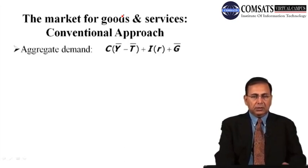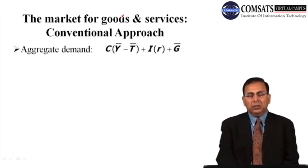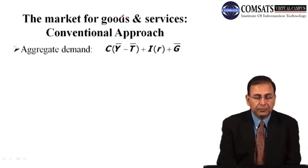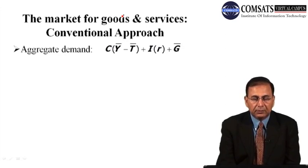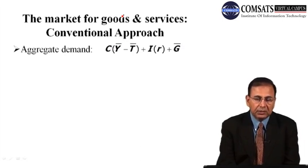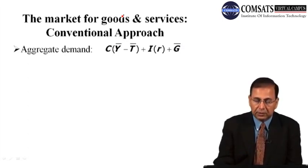According to the conventional system, if we consider a three-sector closed economy, the aggregate demand has three major components: C for consumption, I for investment, and G for government expenditures. In this equation, Y indicates national output or real GDP, T is taxation, I is investment, R is the real interest rate — interest being part and parcel of the conventional system — and G is government expenditure. Summing these three gives us the aggregate demand of the economy.